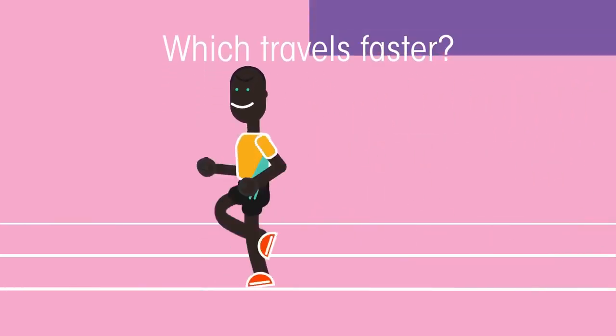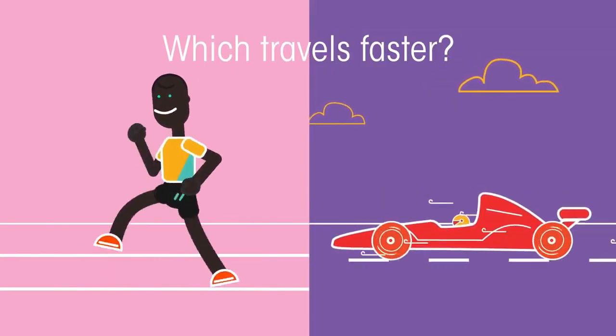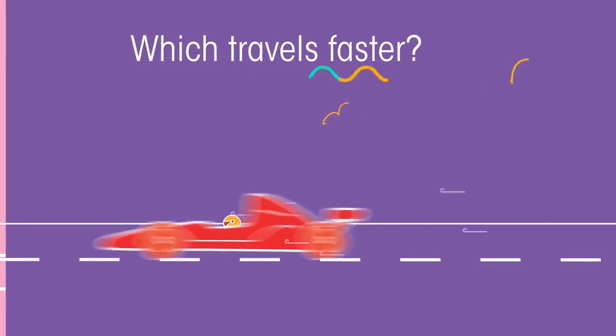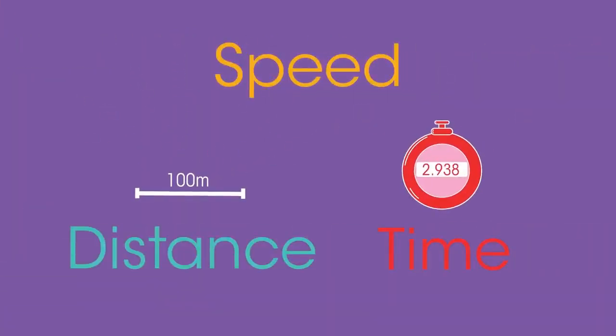Which travels faster, Usain Bolt, the world's fastest runner, or a Formula 1 car? In this video, we'll find out how to calculate speed using distance and time.